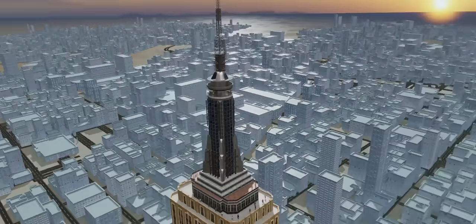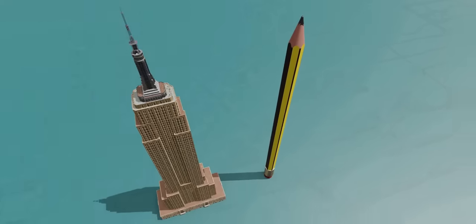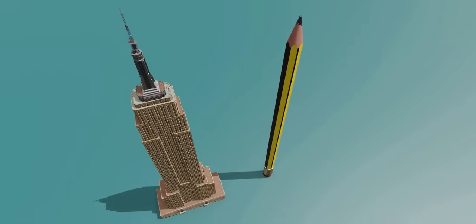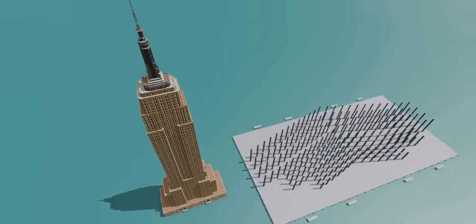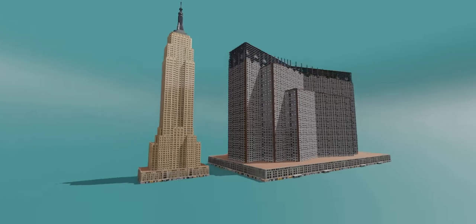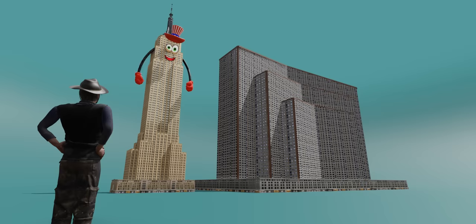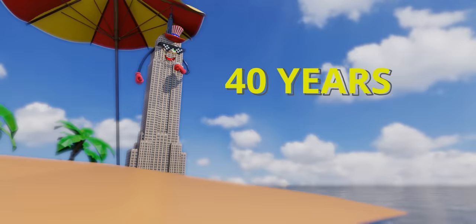The architects of the Empire State Building gave it a thin, pencil-like shape so that spectators would call it a thin building. Obviously, you wouldn't call the building on the right a tall building. Instead, you would call it a wide building. The Empire State Building enjoyed the title of tallest building in the world for 40 years.